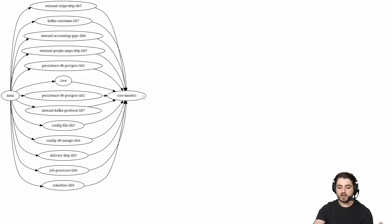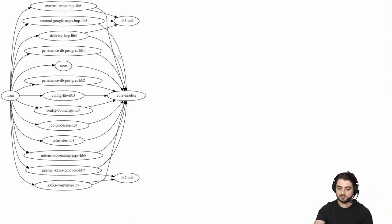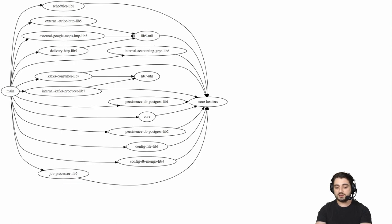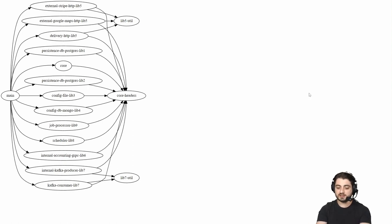The second version also has lib5 and lib7 and they float to the first layer because now they compile in parallel with the core. Everything that uses lib5 now goes to lib5 util and everything that uses lib7 goes to lib7 util. The next version is a bit hard to read, but what happened is that three arrows disappeared — from lib5 to core, from external stripe to core, and from delivery HTTP lib5 to core — because they now transitively depend on core through lib5 util.